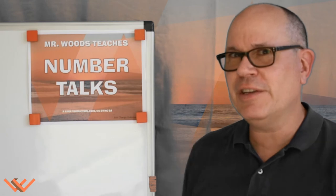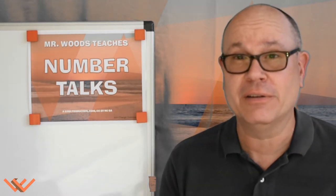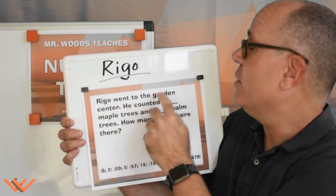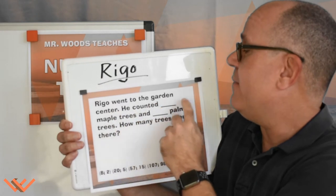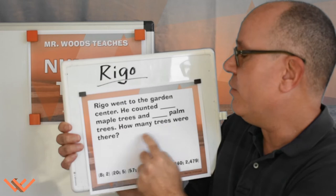Hello Mathematician Gardeners. I'm Mr. Woods Teaches, Number Talks. Hey, today I'm with my great friend Rigo. He's a pretty cool dude, I think so. Rigo went to the garden center. He counted 57 maple trees and 15 palm trees. How many trees were there?